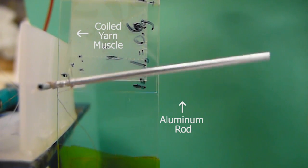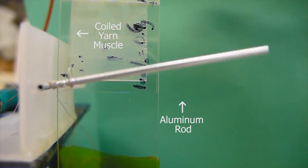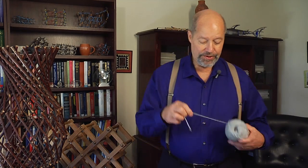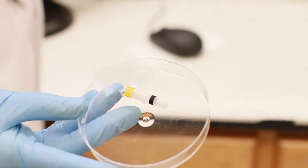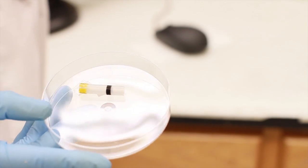Our artificial muscles are based on carbon nanotube yarns. This is just a conventional yarn, but there's not a great deal of difference except for on dimensional scale between this ordinary yarn and our carbon nanotube yarn.